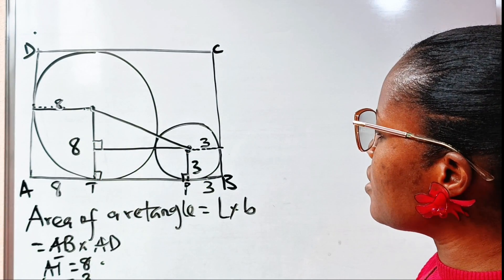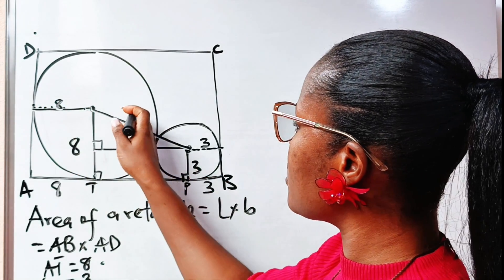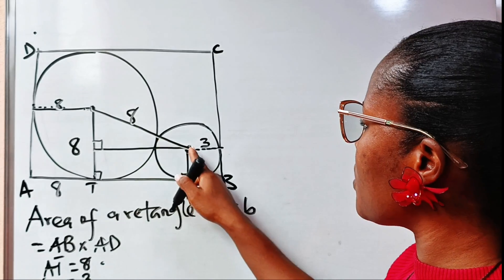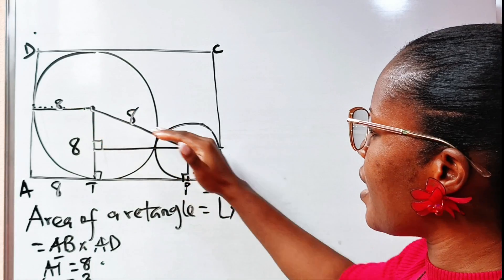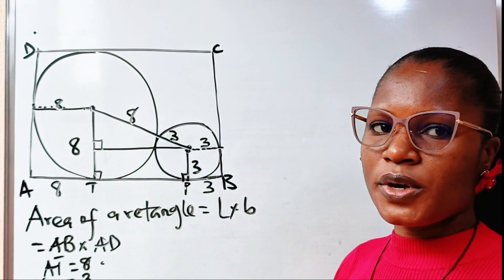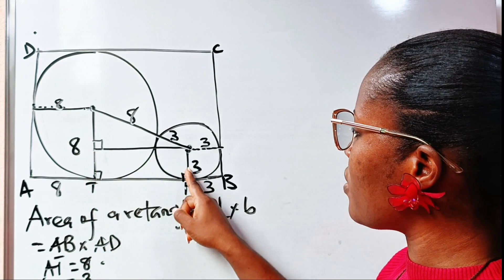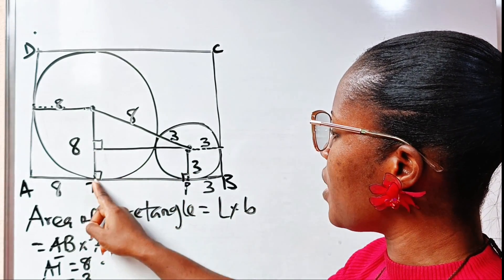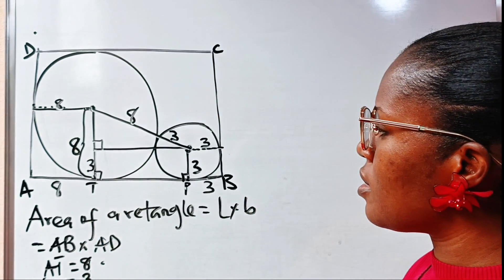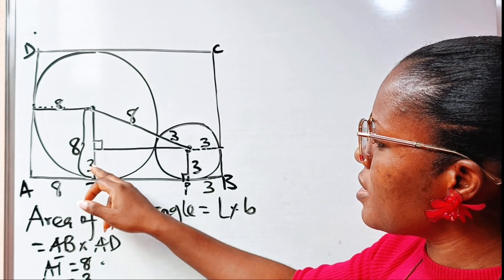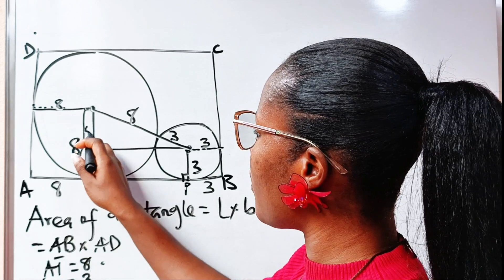This angle is 90 degrees. The distance from the center of the big circle to the center of the small circle is 8 + 3 = 11, which is the hypotenuse. On the vertical side, this distance equals the radius of the big circle (8) minus the radius of the small circle (3), giving us 8 − 3 = 5.